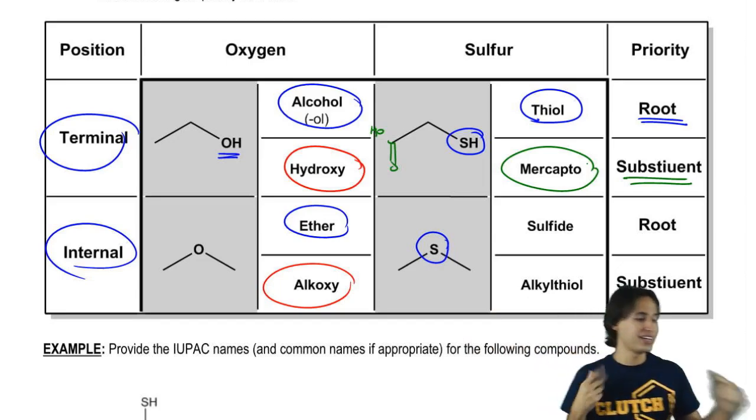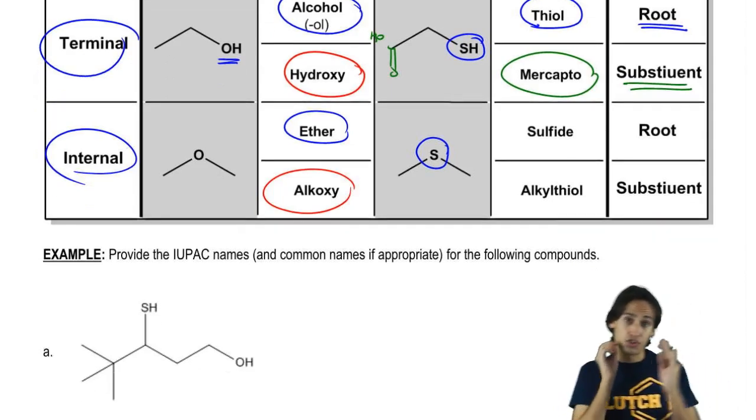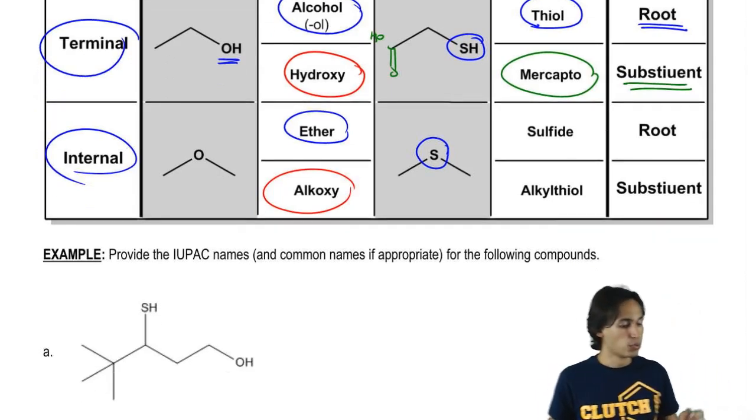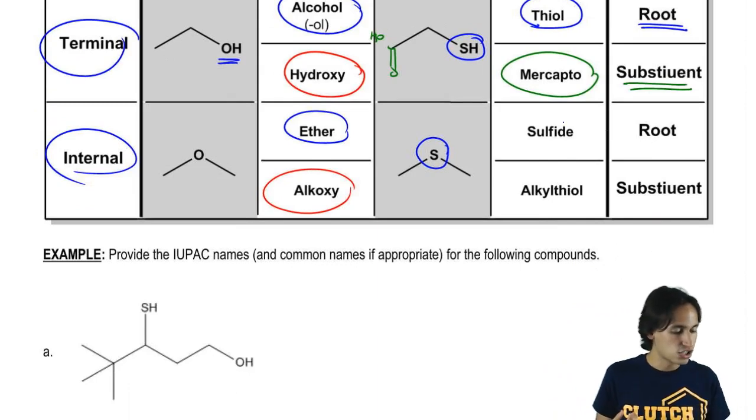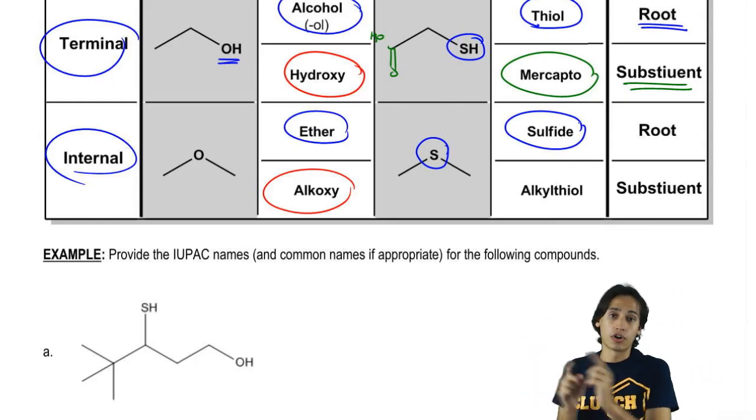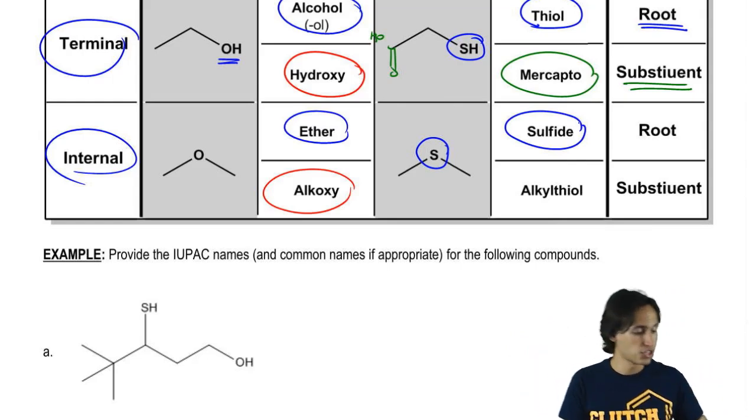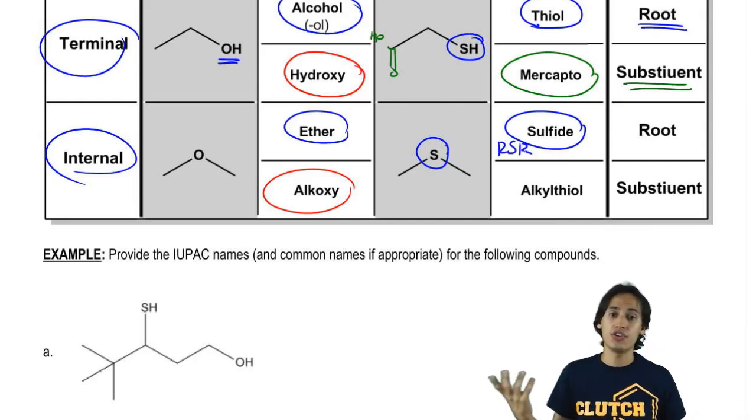Now finally let's go to the ether analog. For ether of a sulfur, a sulfur ether, we're going to name it as a sulfide. Just think that ether is ROR, sulfide is RSR. Just so you can see that it's very similar to ether.